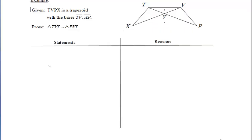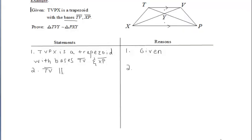Let's take a look at the first example. We want to prove these two triangles, TVY and PXY, similar. Well, we know that we have a trapezoid, so right away I'd be thinking about the basis of the trapezoid being parallel.